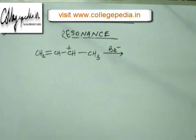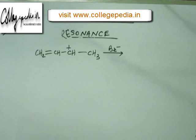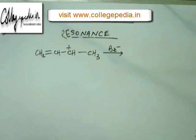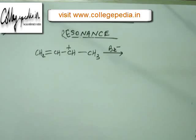Hello everyone, let me welcome all of you once again in this course of video lecture for organic chemistry. Up till now we have completed resonance — we have learned to draw resonating structures, draw resonance hybrid, and seen what is the implication of resonance and how resonance brings about stability. Resonance decreases potential energy by decreasing the charge density, and that brings about stability. When charge density decreases, potential energy decreases. Resonance decreases charge density by spreading the charge throughout the molecule.